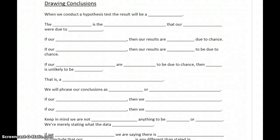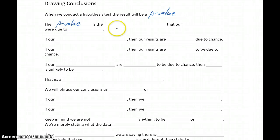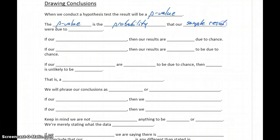Whenever we conduct a hypothesis test, our result will be a p-value. A p-value is just a probability — in this case, it's the probability that our sample results were due to chance.